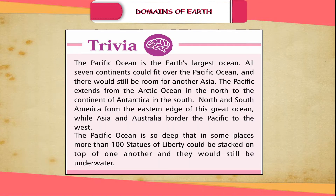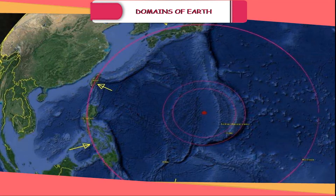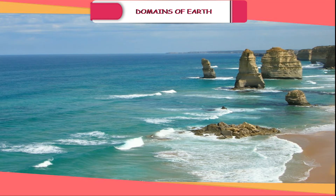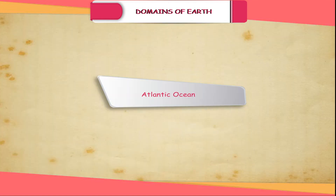Trivia. The Pacific Ocean is the Earth's largest ocean. All seven continents could fit over the Pacific Ocean and there would still be room for another Asia. The Pacific extends from the Arctic Ocean in the north to the continent of Antarctica in the south. North and South America form the eastern edge of this great ocean, while Asia and Australia border the Pacific to the west. The Pacific Ocean is so deep that in some places more than 100 statues of liberty could be stacked on top of one another and they would still be underwater. Pacific Ocean. It is larger in area than all the oceans put together. Mariana Trench, the deepest part of the Earth, lies under the Pacific Ocean. It is circular in shape, surrounded by Asia, Australia, North and South America.